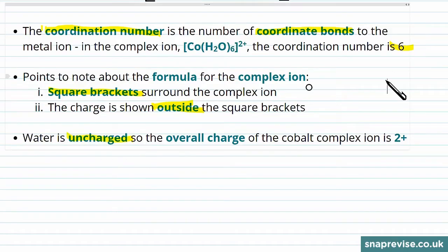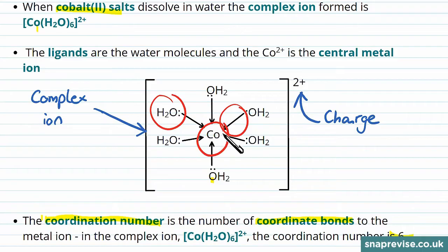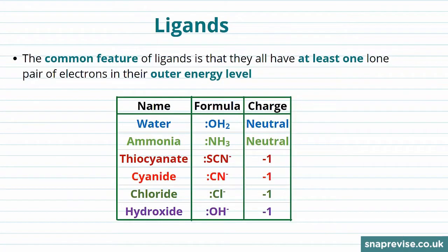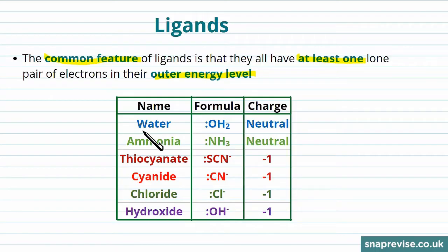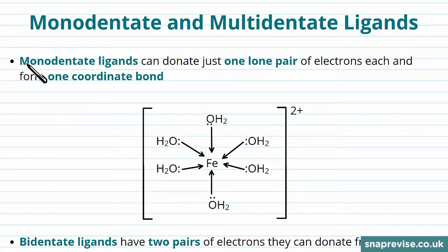Water is uncharged, and so in the example of cobalt above, the cobalt has a two-plus charge, and this gives the overall charge to the complex ion, because there's no contribution from the water. The common feature that makes all ligands is that they have at least one lone pair of electrons per molecule in their outer energy level. Water and ammonia are similar sizes and both neutral. Some other common ligands are thiocyanate (SCN-), cyanide, chloride, and hydroxide, all of which have a negative charge. Chloride is bigger than water or ammonia.